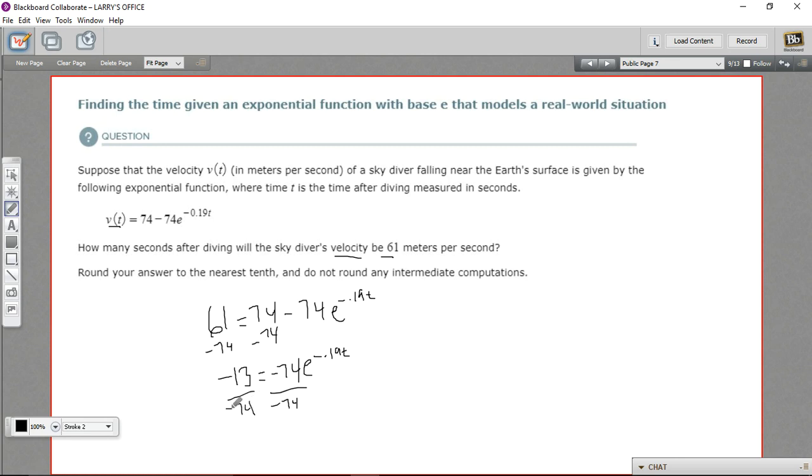So the negatives will cancel here. We'll just get 13 over 74 on the left. And on the right, we're going to just have e to the negative 0.19 t power.